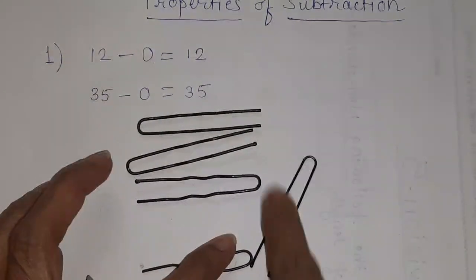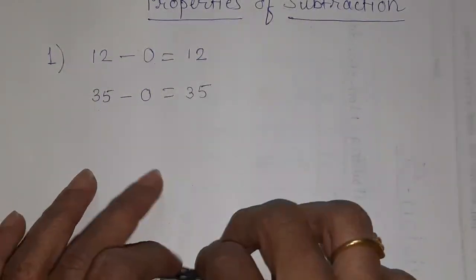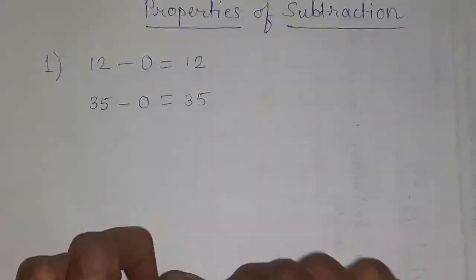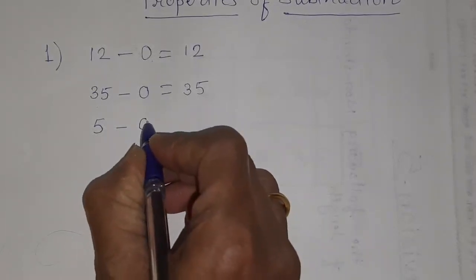So, how many are remaining? 1, 2, 3, 4 and 5. So, you are getting the same answer. Means, I was having 5 pins.